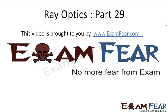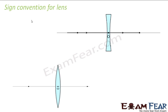Hello friends, this video on ray optics part 29 is brought to you by examfear.com. Please make sure that you have watched all the videos till part 28 before going ahead with part 29. Now let us look at the sign convention for lengths. I will show you four scenarios which will clear out the concept for the convention which we follow regarding sign in case of a lens.